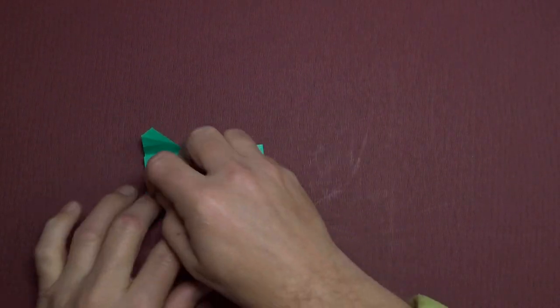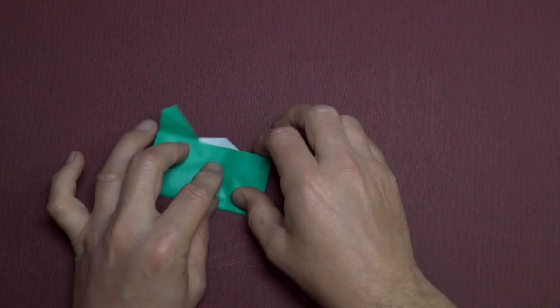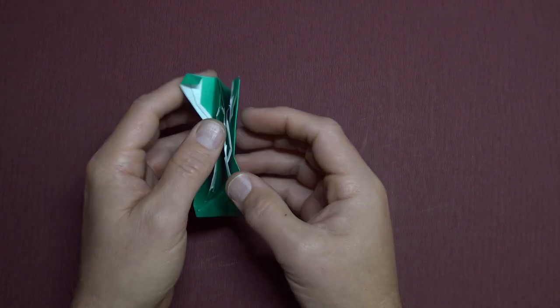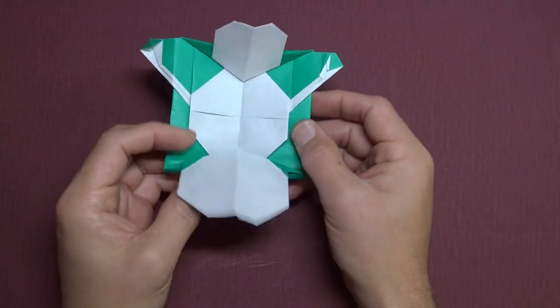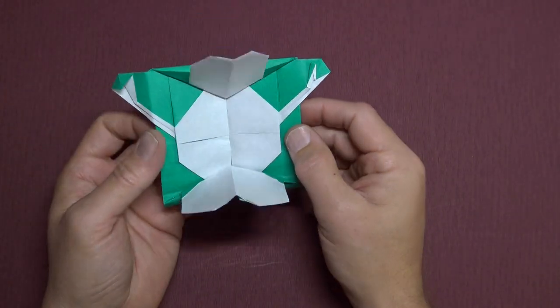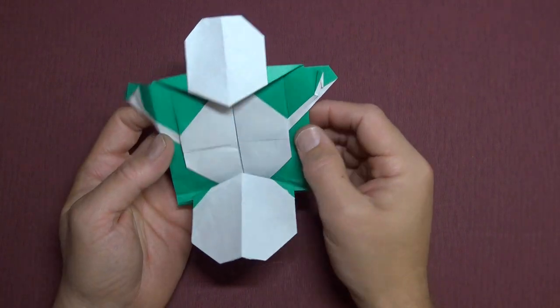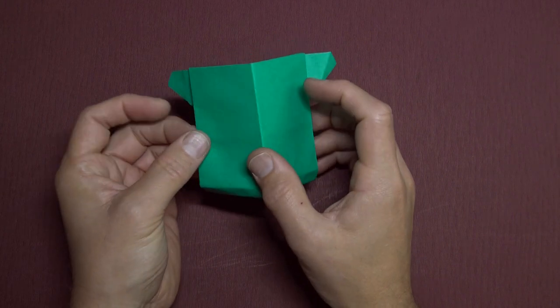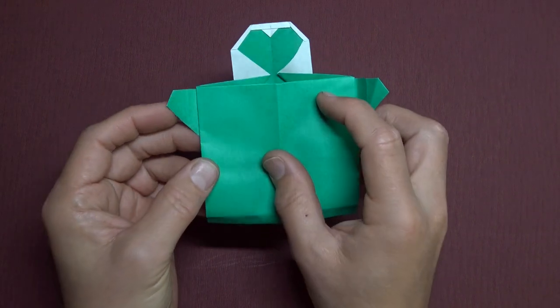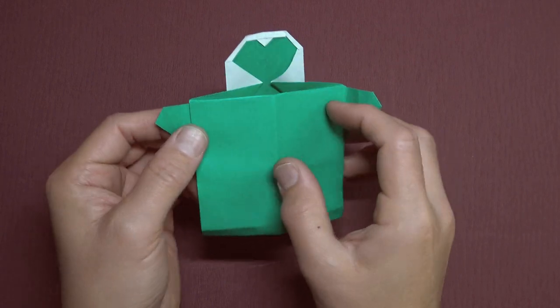Crease it nice and sharply. And it's also on this side, it's a hat. And when you open it up, a heart pops out of the hat. So that's a lovely model.